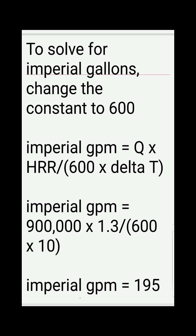Substituting the known and calculated values: imperial gallons per minute equals 900,000 BTU/hr times 1.3, divided by (600 times 10 Delta T). Using our calculators, we arrive at the answer of 195 imperial gallons per minute.